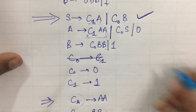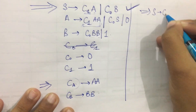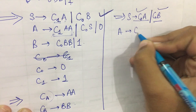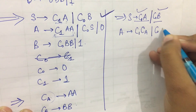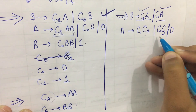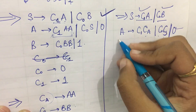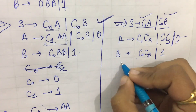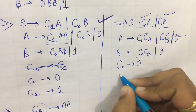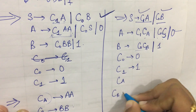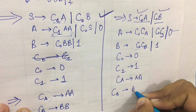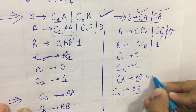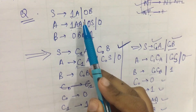Writing out the final converted rules: S → C1 a | C0 B — this is in CNF. Then: A → C1 CA | C0 C | C0 S | 0 — two non-terminals, in CNF. Then: B → C0 CB | 1 — in CNF. C0 and C1 are single terminals, and CA and CB each produce a string of two non-terminals — all in CNF.